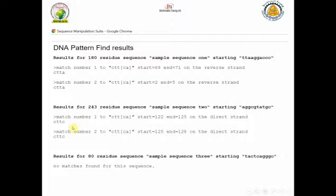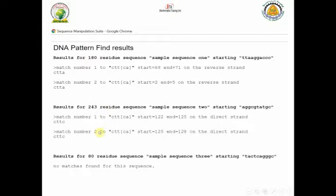In the first example, you can see that the program found the pattern at a specific position — showing the start and end of that position — and also found it in the reverse strand at another position. In the second sequence it was found in two different positions, while in the third sequence it was not found at all. It's a very simple and very useful program.